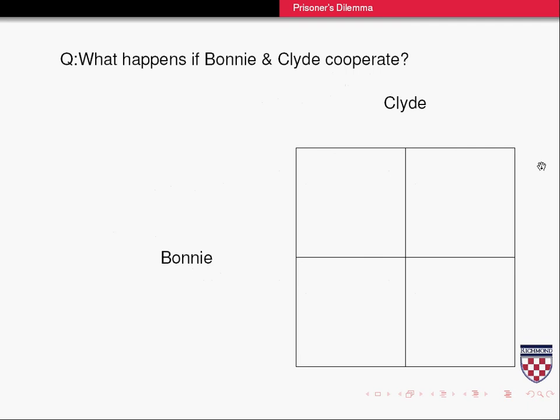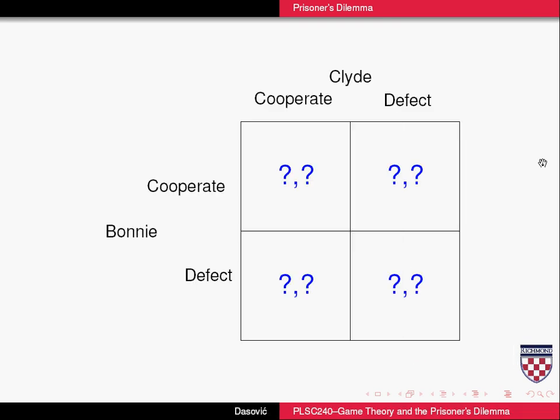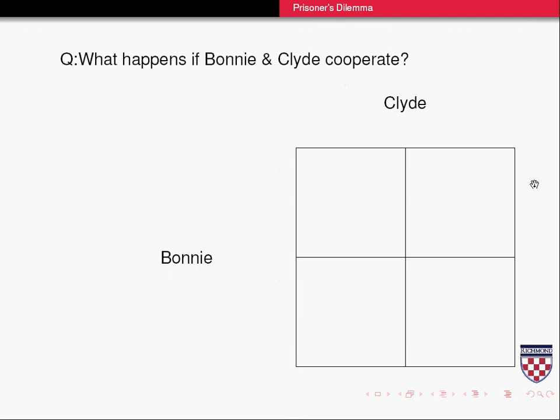Given the setup of the game, the reason the prisoner's dilemma is the prisoner's dilemma is really about the nature of the payoff matrix — it's a specific type of payoff matrix, and we'll see that in a second.